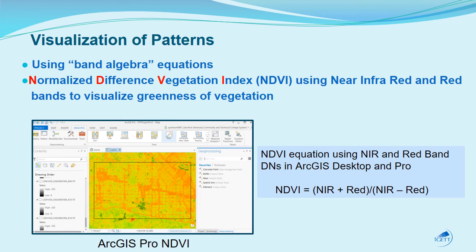We can also use different radiometric bands that we can't see to help visualize patterns not otherwise easy to see. One method uses band algebra — the NDVI equation: NDVI equals near-infrared minus red divided by near-infrared plus red. This is the Normalized Difference Vegetation Index and it shows greenness. In this graphic from ArcGIS Pro, you can clearly see that green areas represent healthy or robust vegetation, while urban areas appear red.